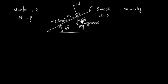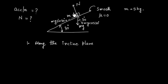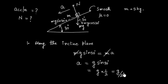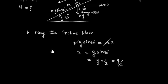We write Newton's second law parallel to the incline. Assuming the mass moves down the incline with acceleration A, the net force along the incline is mg sin 30°. So: mg sin 30° = mA, giving A = g sin 30° = g/2. Taking g = 10 m/s², the acceleration is 5 m/s².